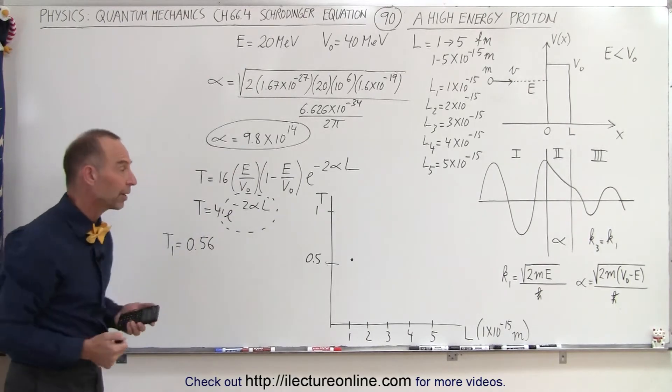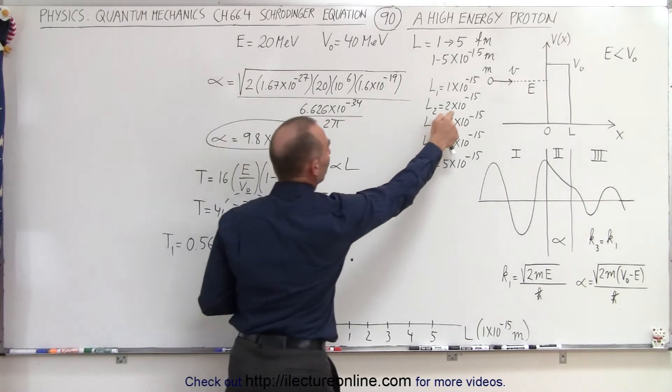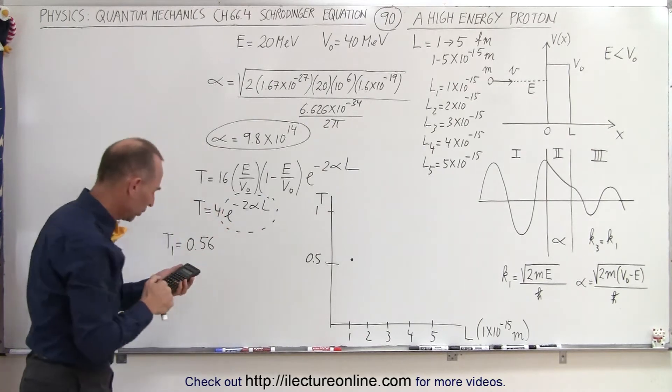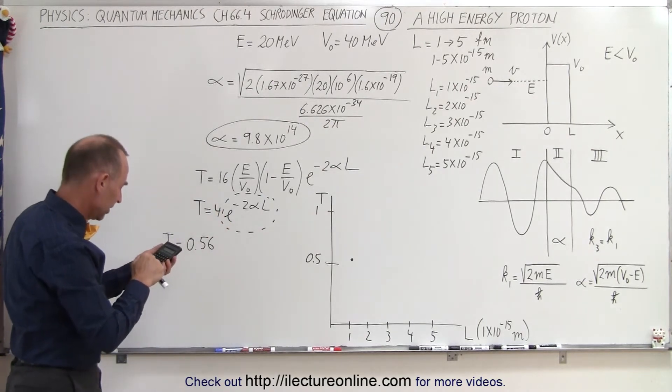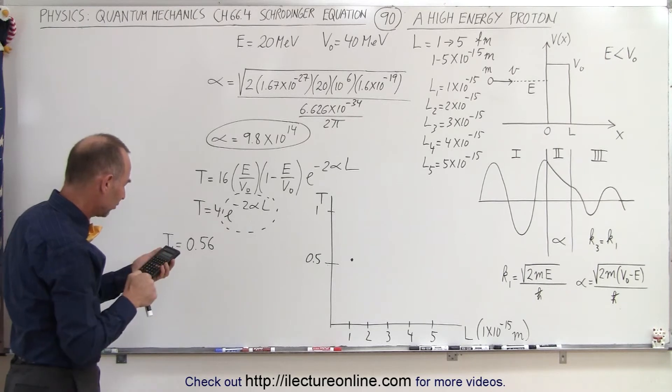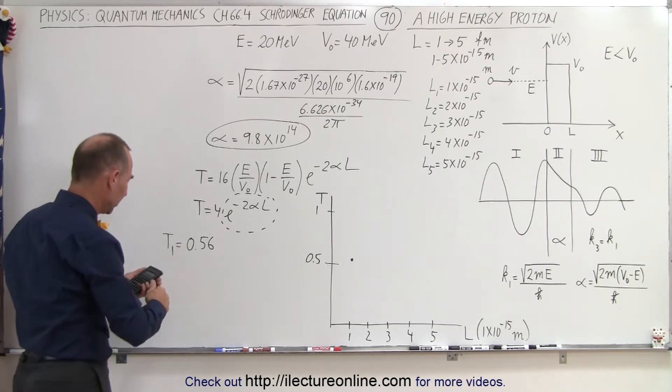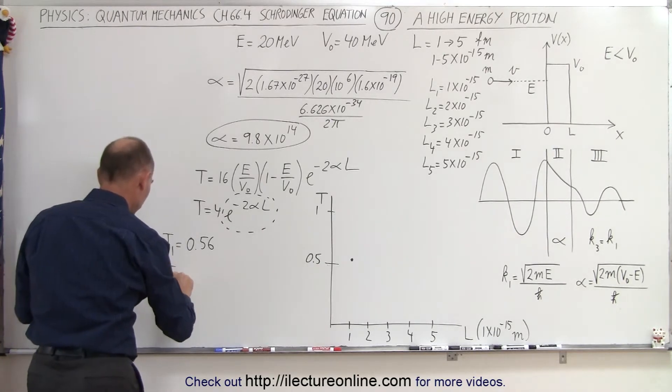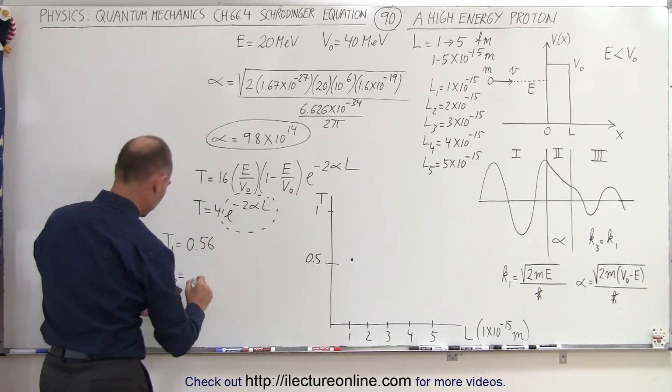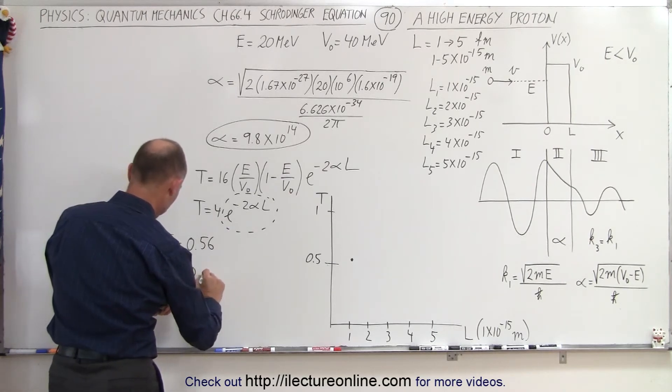Now let's double the width of the barrier, go to 2 femtometers. So when we do that, what do we get over here? We have 9.8 e to the 14th times 2 e to the 15th minus times 2. Put a negative in front of that, get the exponent, multiply times 4. Times 4, and now our probability has dropped. T2 is equal to 0.08.